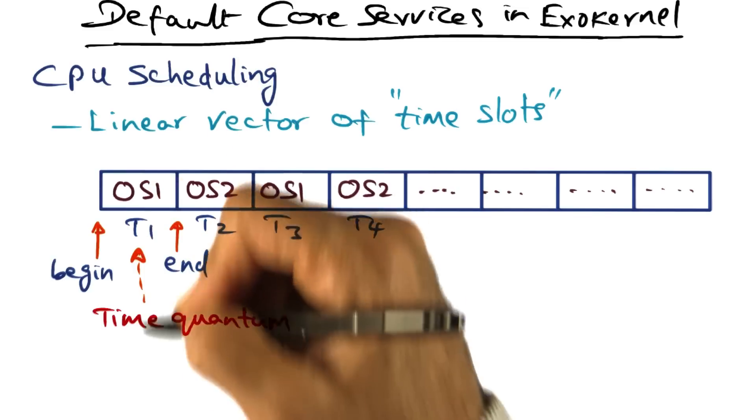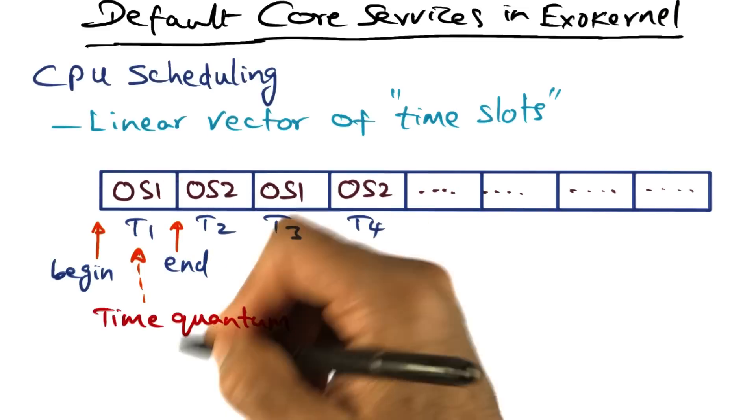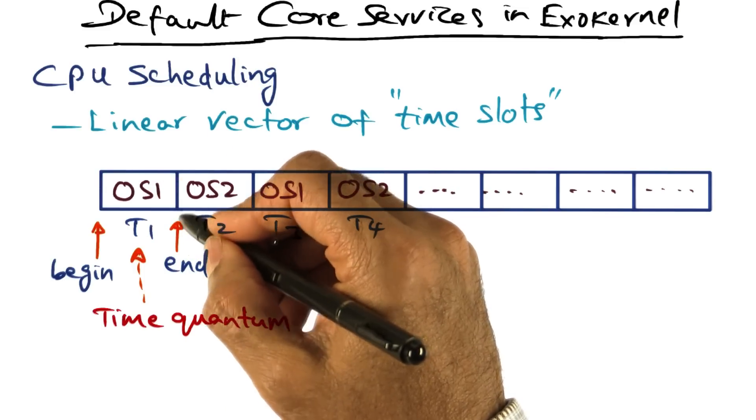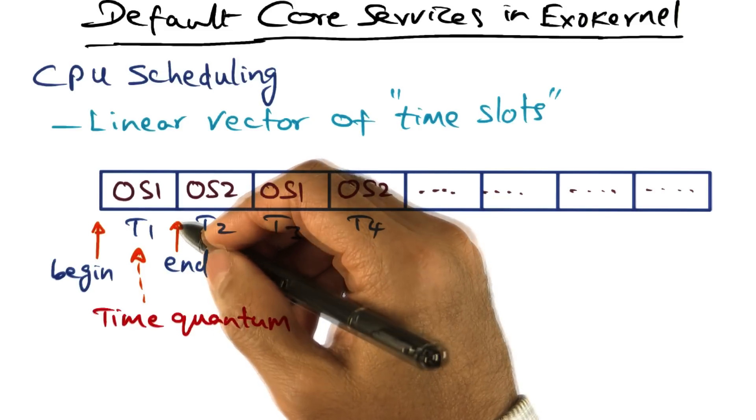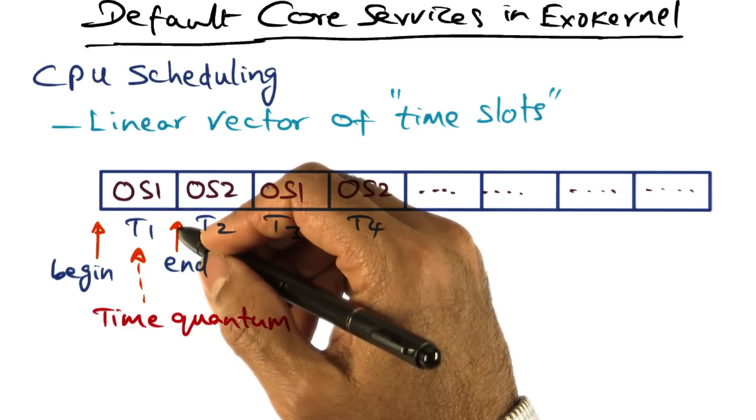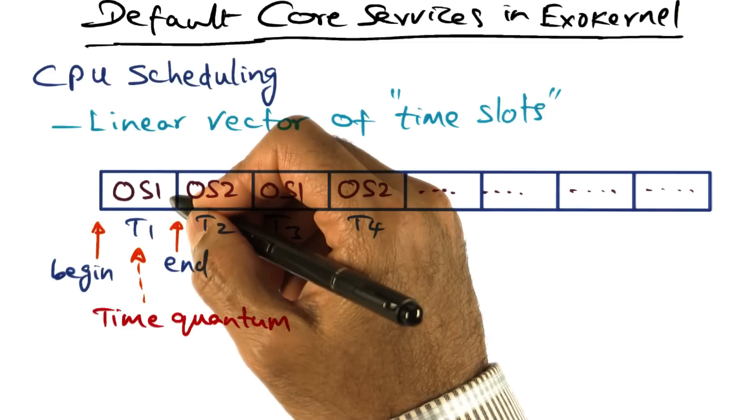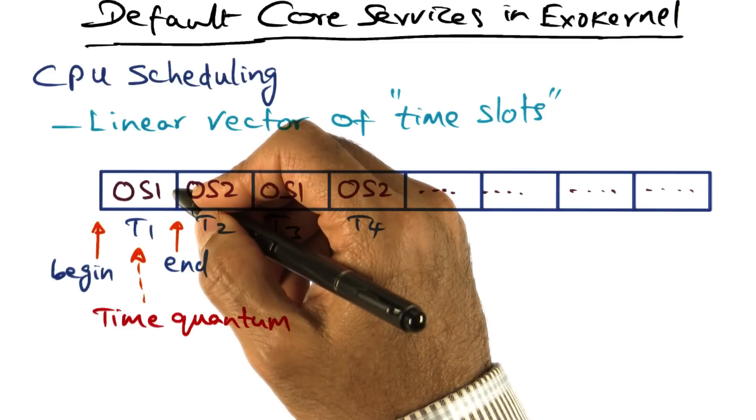Let's say OS1 is now running on the CPU. When the timer interrupt goes off at this endpoint, control is transferred by exo-kernel to the library operating system to do any saving that it has to do of the context.